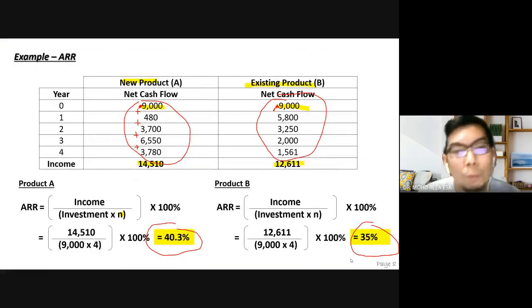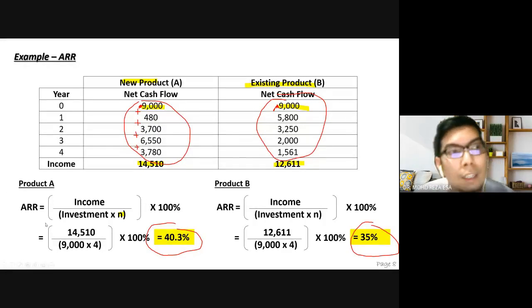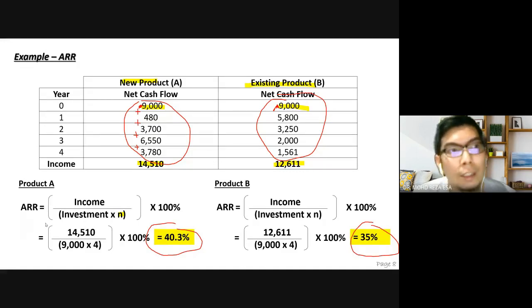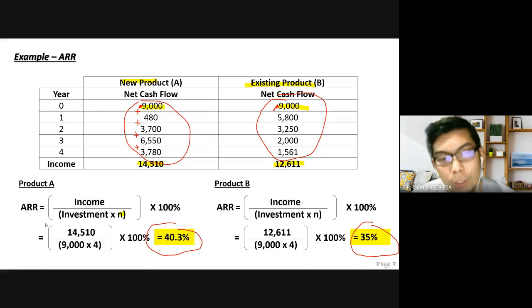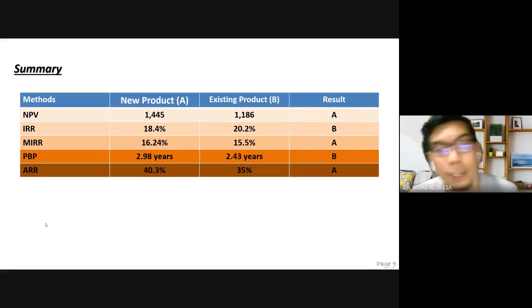There is a conflict between methods: payback period suggests Product B (existing product) because it recovers capital faster at 2.43 years, while ARR suggests Product A (new product) because its return of 40.3% is higher than Product B's 35%.